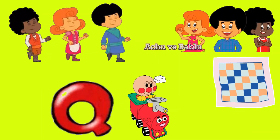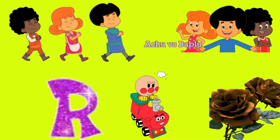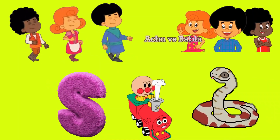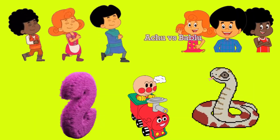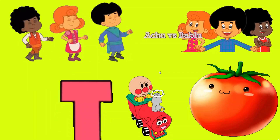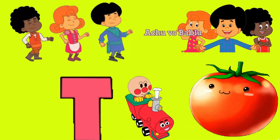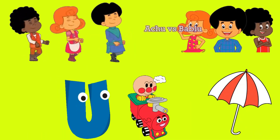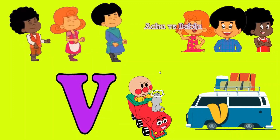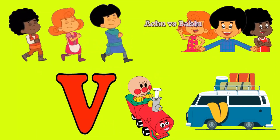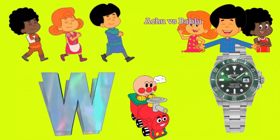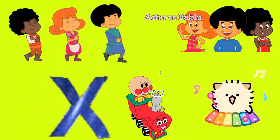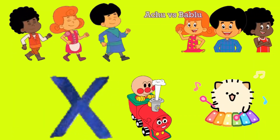Q for Quilt. R for Rose. S for Snake. T for Tomato. U for Umbrella. V for Van. W for Watch. X for Xylophone.